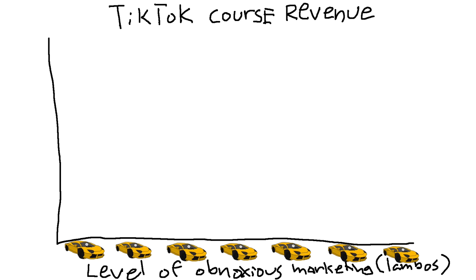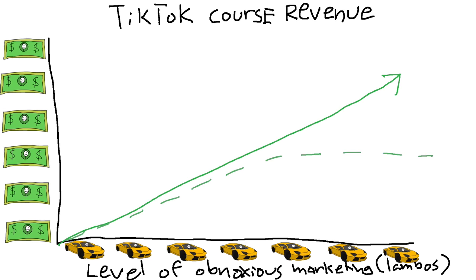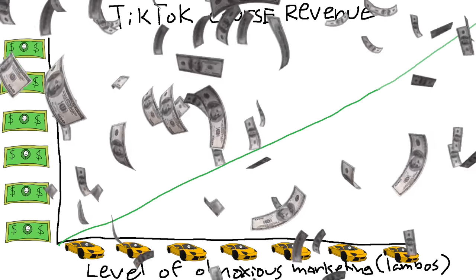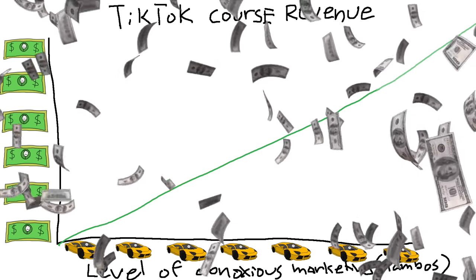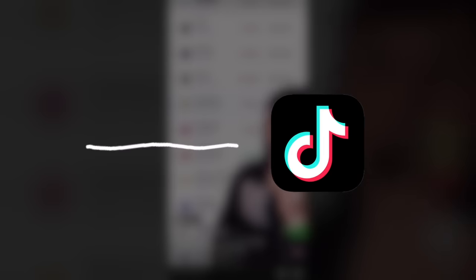On your y-axis, you have revenue from trading courses. The curve goes like this, which is funny, right? Because you'd think there'd be some cutoff point where the marketing is so blatantly misleading that people would stop paying attention to it. Not true. The more obnoxious it is, the more gross revenue you make.